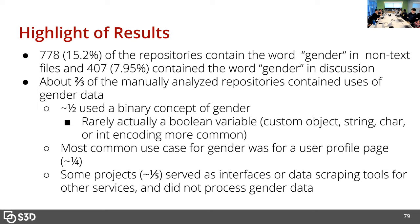Of the projects that were actually using gender data, about half used a binary conception of gender. Most of them didn't actually use a boolean variable — it was more often a custom object to encode gender, or a string, character, or int, though the int probably just represents a zero or one. The most common use case was for a profile page on a social media application. A considerable amount — about a fifth of the sample — were just interfaces for other things, like downloading data from Facebook.